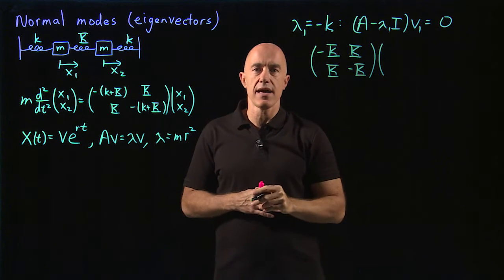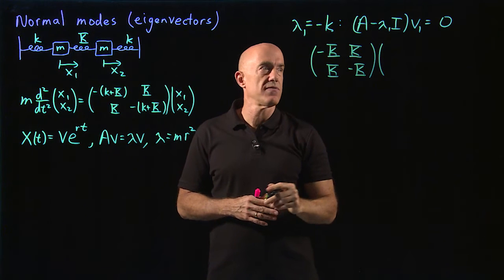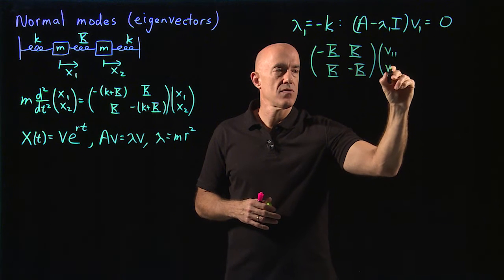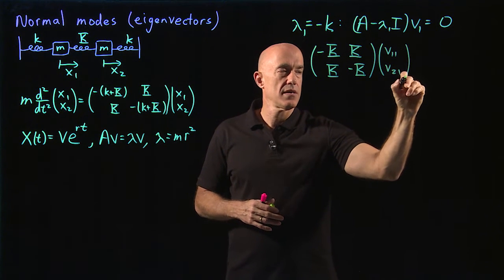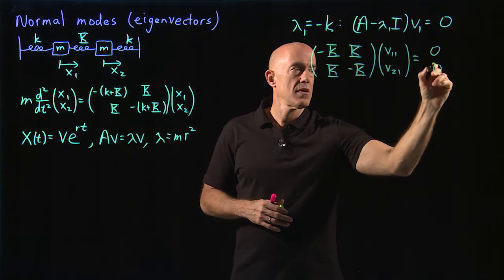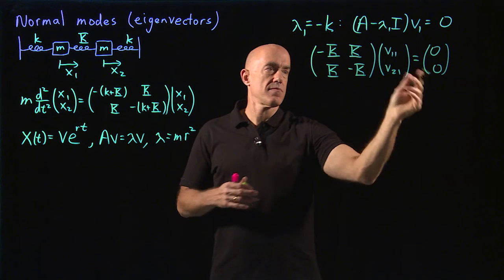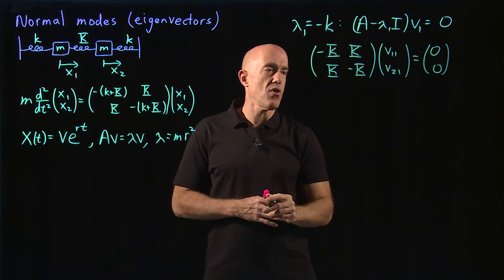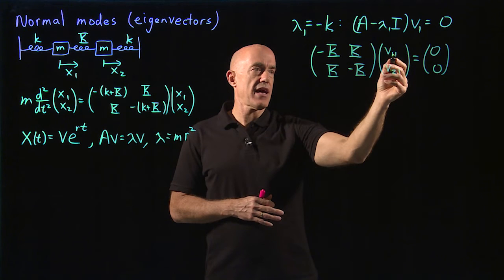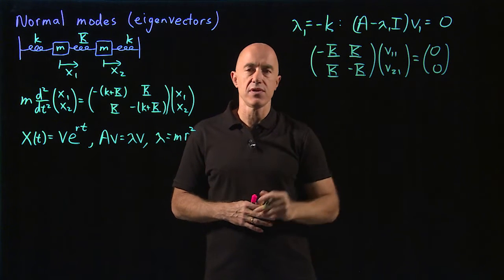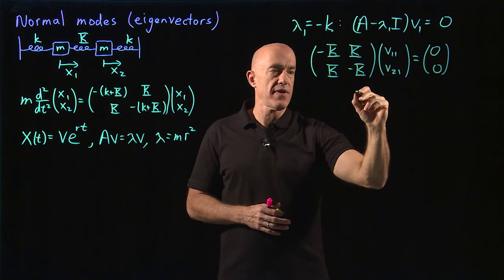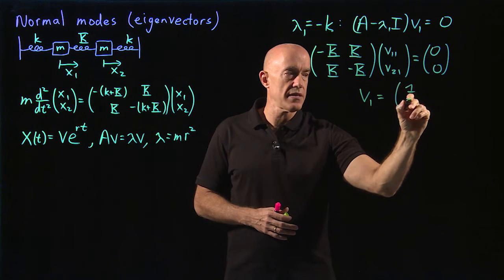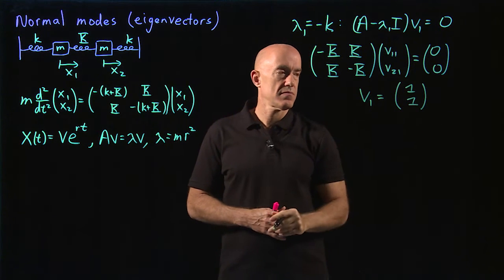We can write that as the first column of a two-by-two matrix — row one column one, row two column one — and that's supposed to be zero. The second equation is just the negative of the first equation. You can read off the eigenvector: v one-one equals v two-one. So our first eigenvector v one is simply [1, 1].